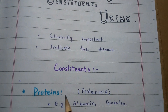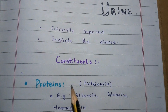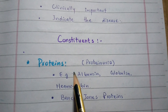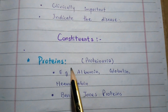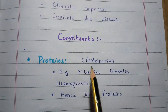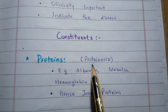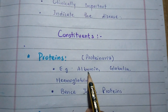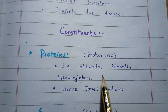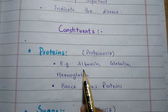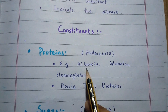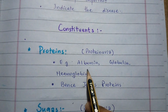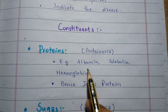Number one is proteins. The presence of protein in the urine makes the urine abnormal. This condition is called proteinuria. These proteins may be albumin, globulin, or hemoglobin. If albumin is present in the urine, then the condition is called albuminuria.